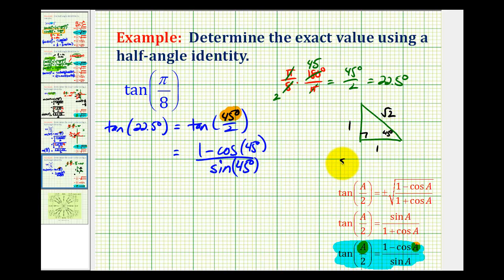So sin(45°) equals 1/√2, which rationalizes to √2/2. And because this is an isosceles right triangle, cos(45°) is the same.